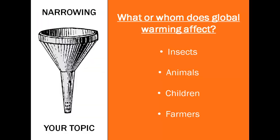As you read through online articles and websites on your topic, think about what or whom your topic affects. In our example, global warming affects everyone, but we can brainstorm specific groups that might be interesting to look at, like insects, animals, children, and farmers.